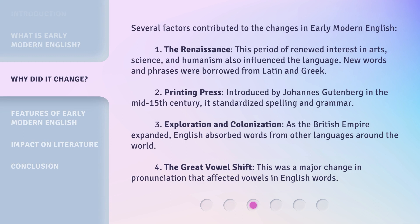Several factors contributed to the changes in Early Modern English. First, the Renaissance: this period of renewed interest in arts, science, and humanism also influenced the language. New words and phrases were borrowed from Latin and Greek.